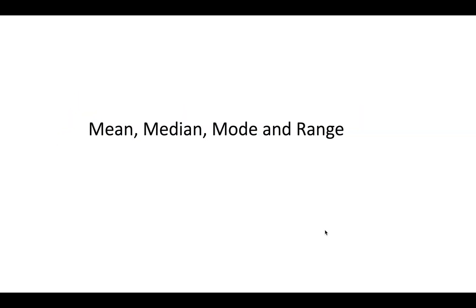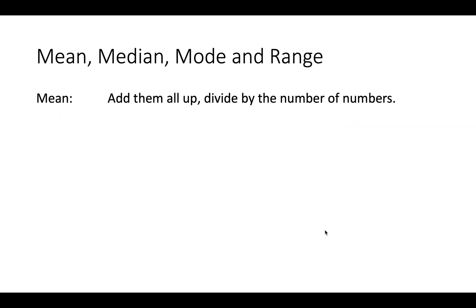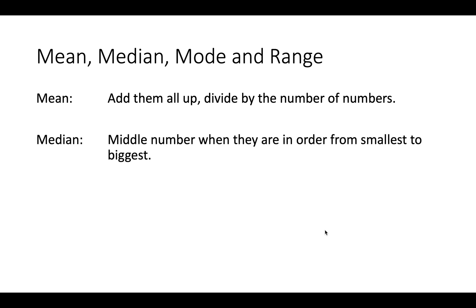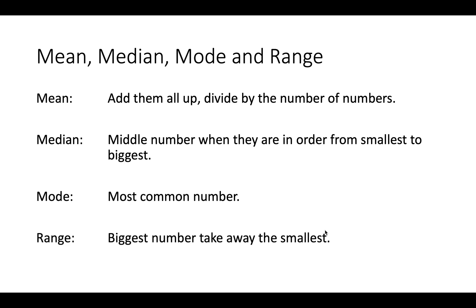So what are they? Mean: you add them all up and divide by the number of numbers. Median is the middle number when they are in order from smallest to biggest. Mode is the most common number, and range is the biggest number take away the smallest number.